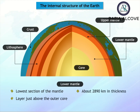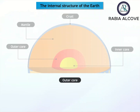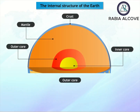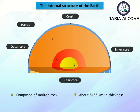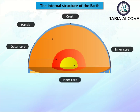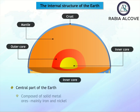The outer core is the upper section of the core, composed of molten rock, and is about 5,155 kilometers in thickness. The inner core is the central part of the Earth, composed of solid metal ores, mainly iron and nickel. It is about 6,360 kilometers in diameter.